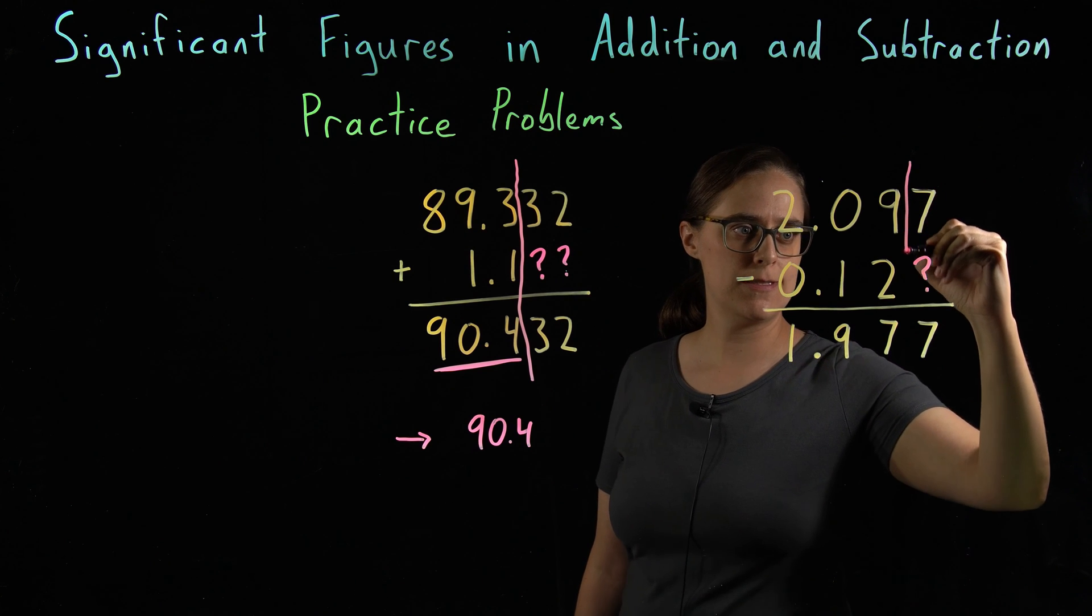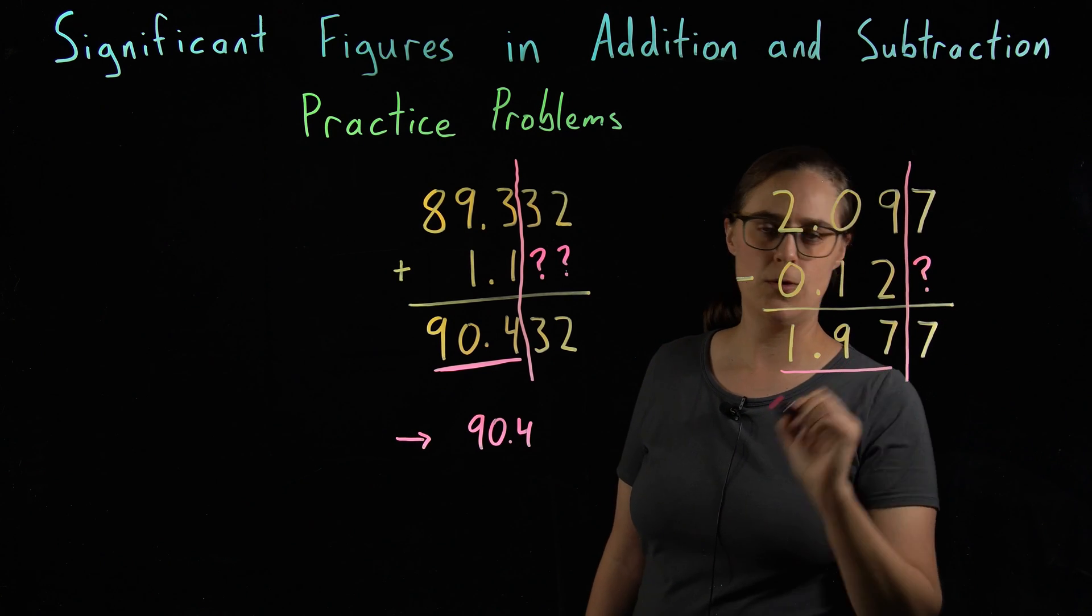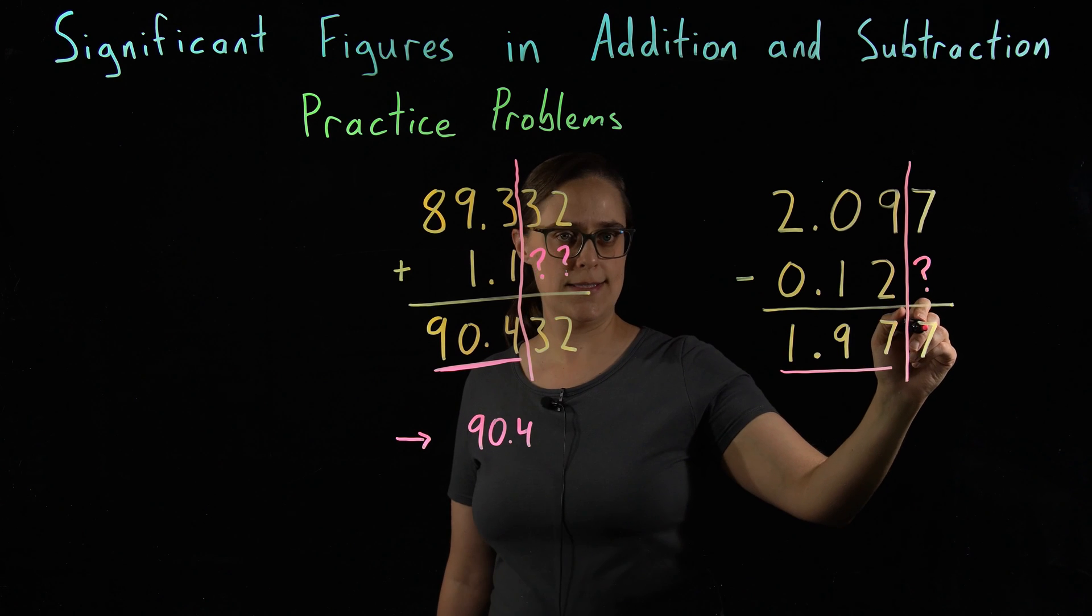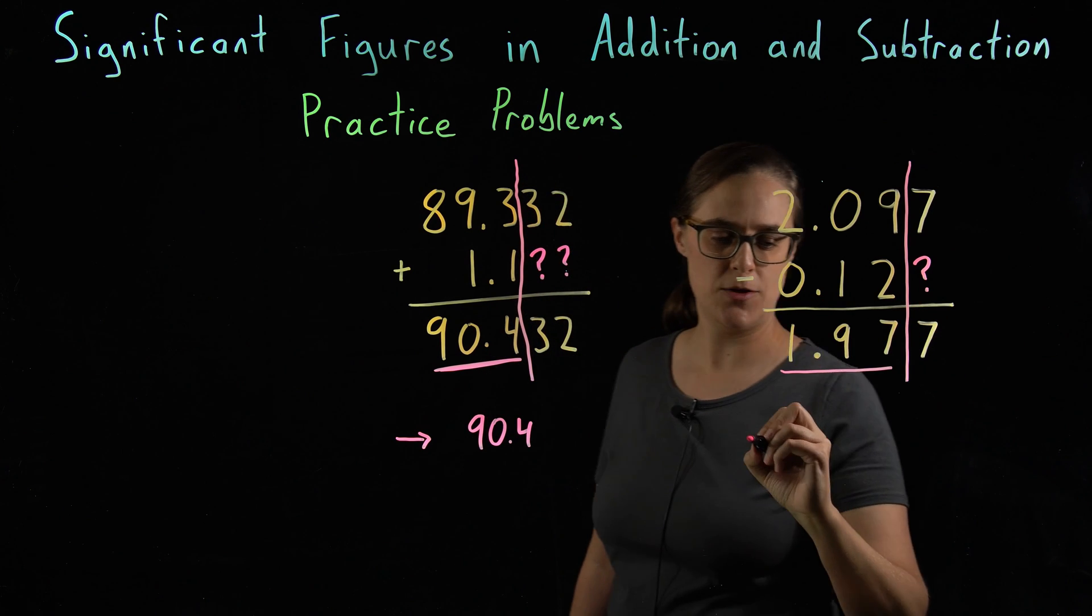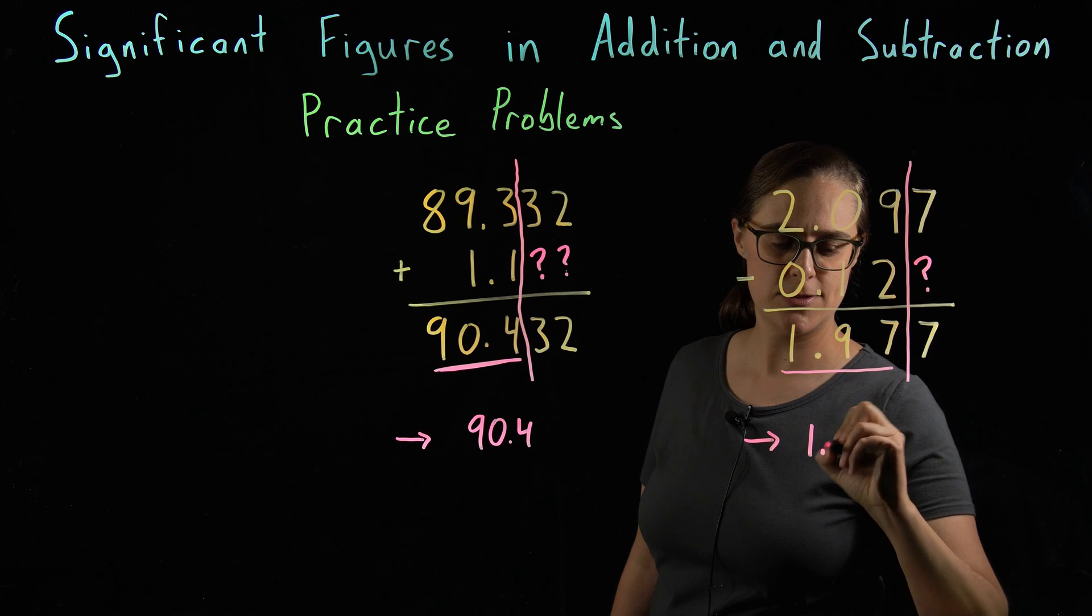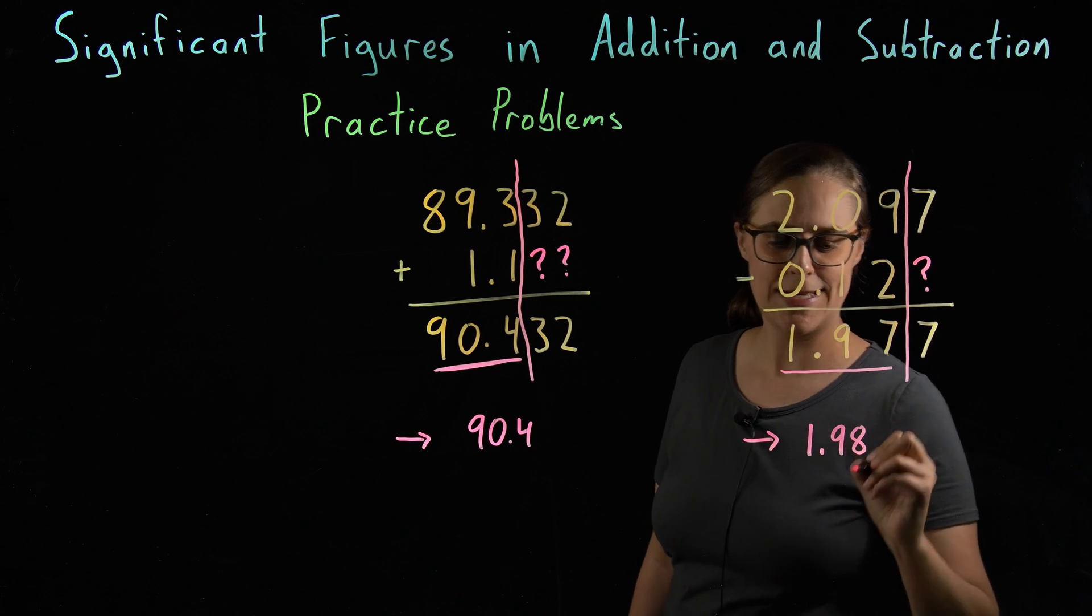So this is our cutoff. We only know three digits. This is still a 7, so this ends up needing to be rounded up. So our correct answer is 1.98.